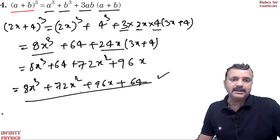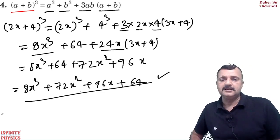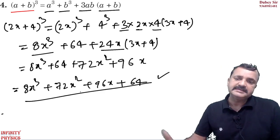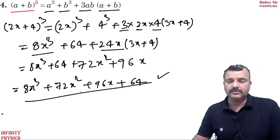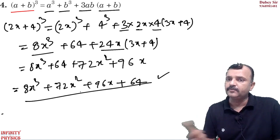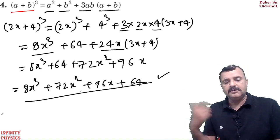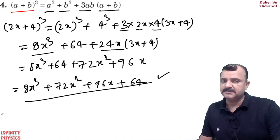So if you remember this formula, you can definitely solve very easily. So (a + b) whole cube is equal to a cube plus b cube plus 3ab(a + b). Clear?